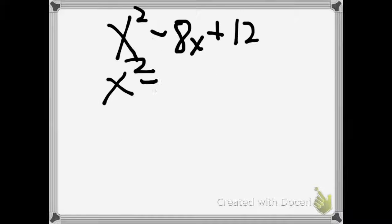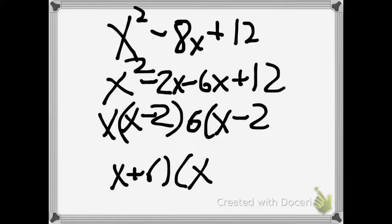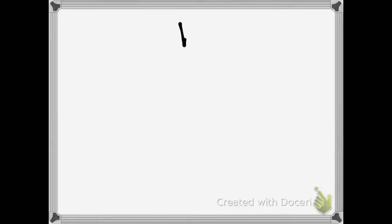We can go ahead and plug in negative 2x and negative 6x plus 12. Now we just create a common factor, and we get x plus 6 times x minus 2. And that is how you do factoring.